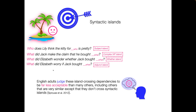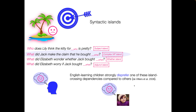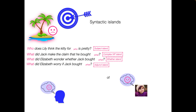English adults judge these island-crossing dependencies to be far less acceptable — far less preferred — than many others, including others that are pretty similar, except that they don't cross this latent structure of a syntactic island. It turns out that English-learning children also strongly disprefer at least one of these island-crossing dependencies: the complex NP one — 'What did Jack make the claim that he bought?' style. They disprefer this dependency compared to others, and we'll talk a bit more about that in a moment.